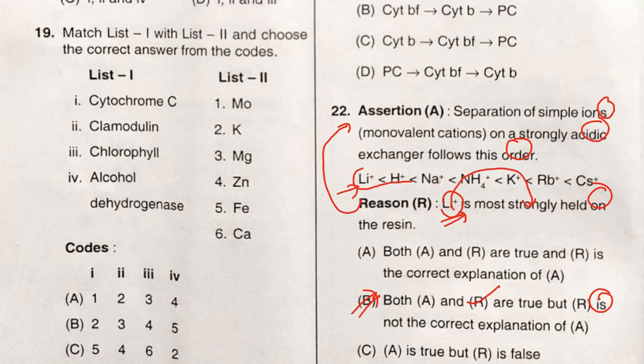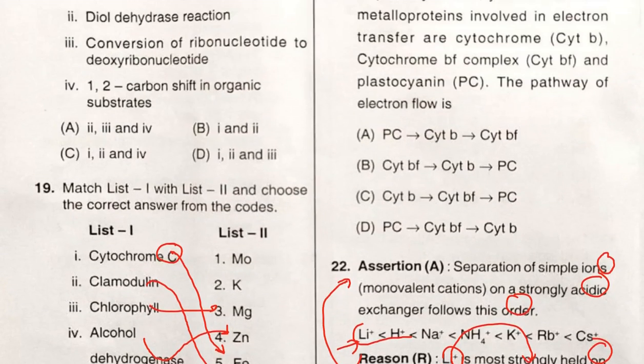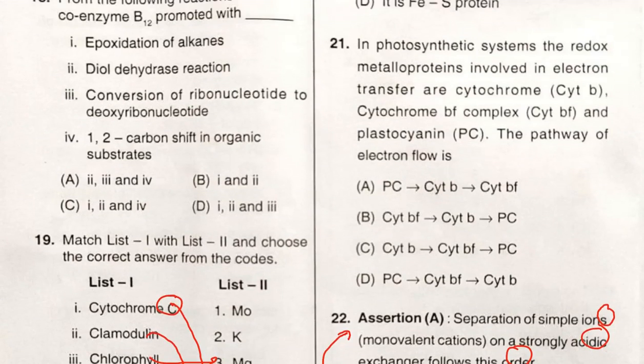Match list one with list two and choose the correct answer. Cytochrome c contains iron, calmodulin contains calcium, chlorophyll contains magnesium, and alcohol dehydrogenase contains zinc. This is bioinorganic chemistry. In CSIR also these same questions appear - some are copy-paste from previous year papers.